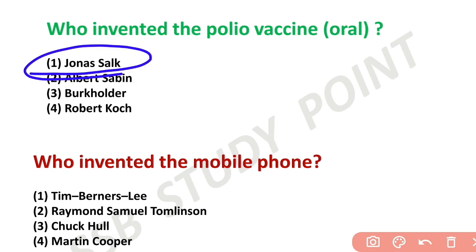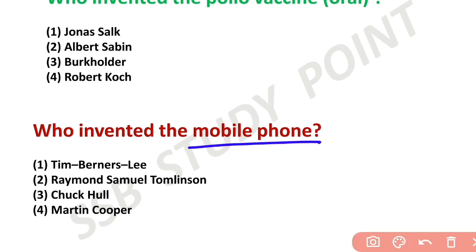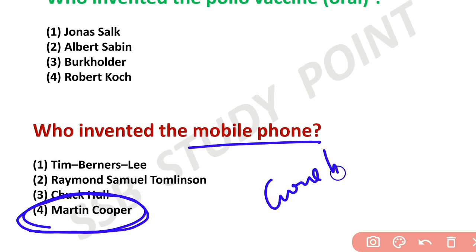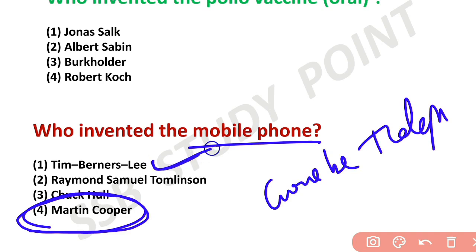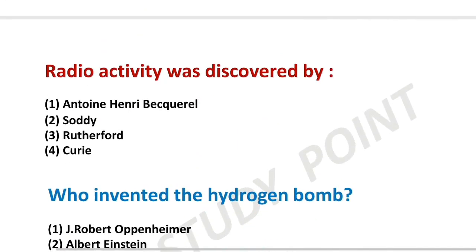Who invented the mobile phone? Martin Cooper invented the mobile phone. Note: Graham Bell invented the telephone — there are telephone lines associated with Graham Bell. The mobile phone is credited to Martin Cooper. Tim Berners-Lee invented the World Wide Web (WWW).